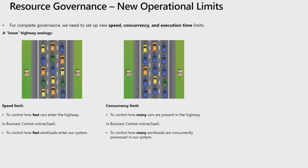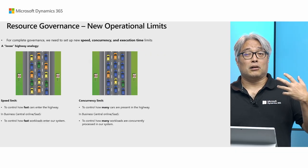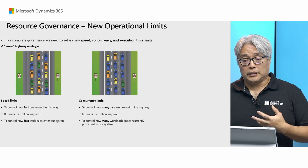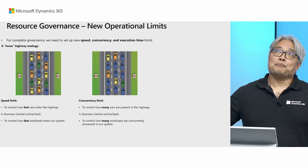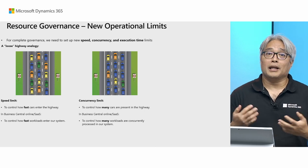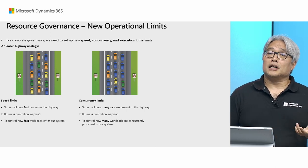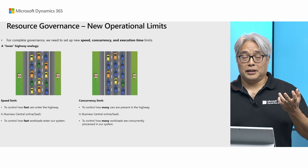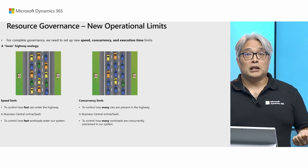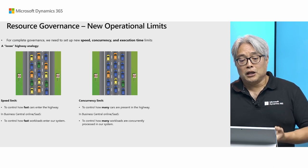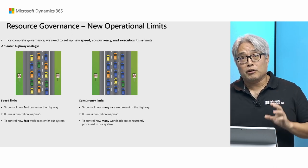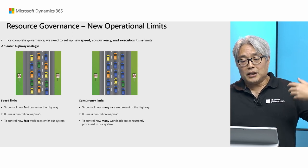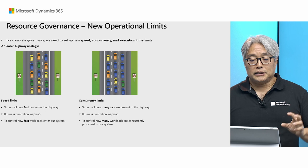The next concept is the concurrency limit. By the way, speed limit and concurrency limits already exist in Business Central online — it's just currently on a per-environment basis. We will introduce a per-user basis later on. In the concurrency limit analogy, imagine all cars are entering the highway under the speed limit, but there are blue cars coming from different entry points, so you end up with more blue cars at the same time in the highway. That cannot be controlled with speed limit alone. We have to introduce a concurrency limit to control how many cars are present at any given moment — or in BC online, to control how many workloads are concurrently processed.